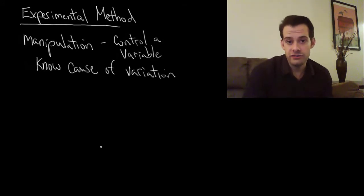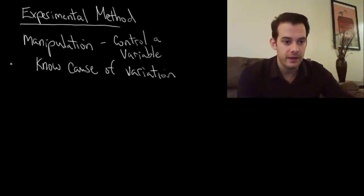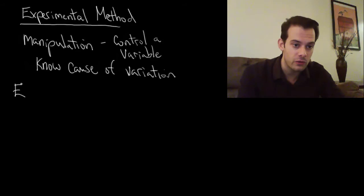Now we know the researcher is the reason for this particular variable. If we're going to manipulate the variable amongst participants, this means we need to split our participants up into groups. Generally we're going to have two groups: an experimental group and a control group.